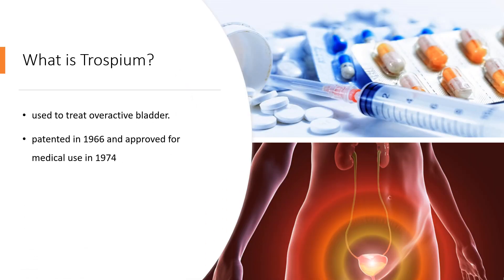Trospium chloride is used to treat overactive bladder. It has side effects typical of drugs like it, namely dry mouth, stomach upset, and constipation. These side effects cause problems with people taking their medicine as directed.